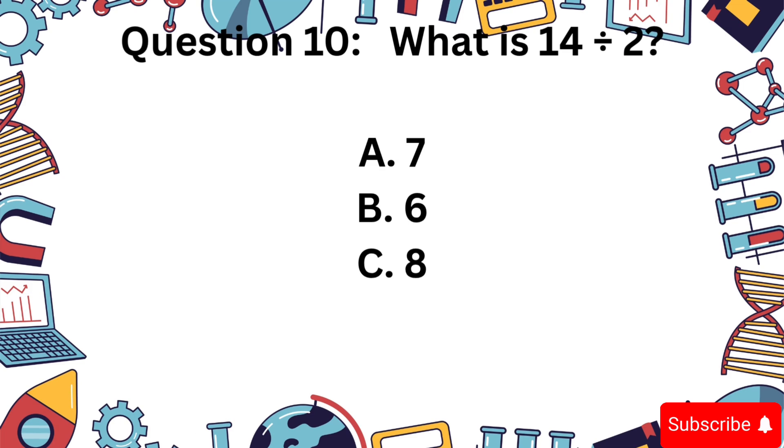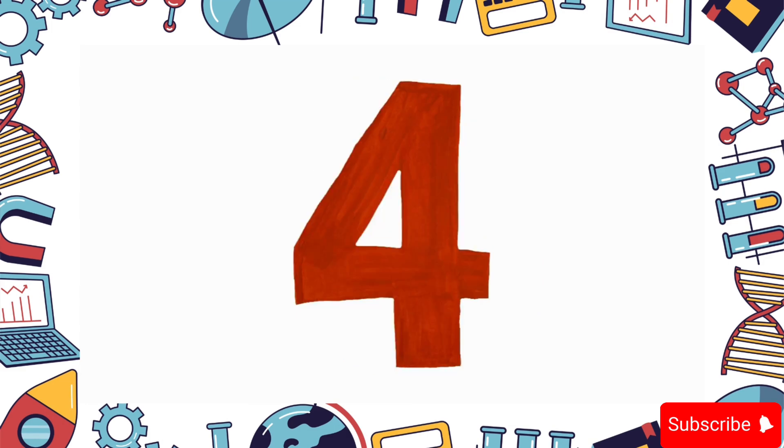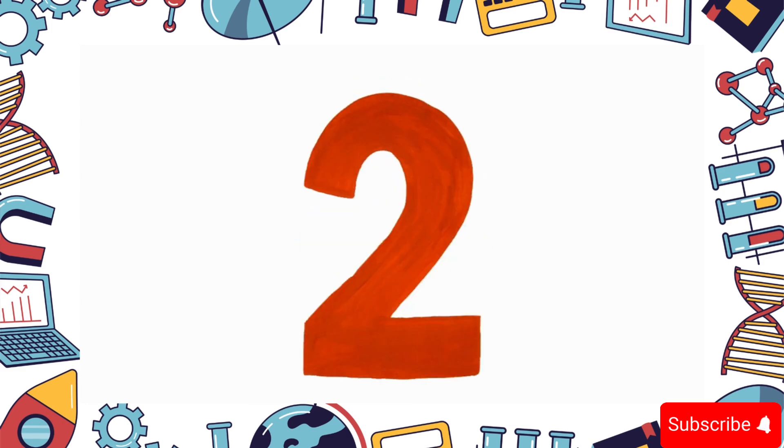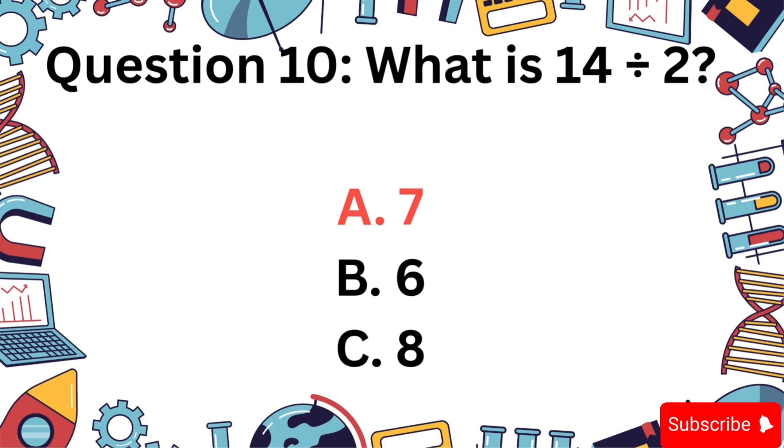What is 14 divided by 2? A, 7, B, 6, C, 8? The answer is A, 7.